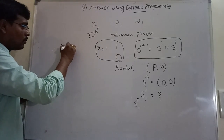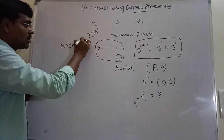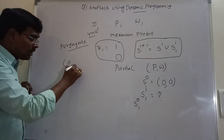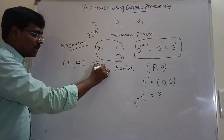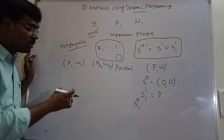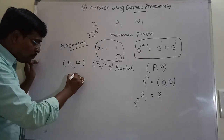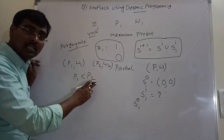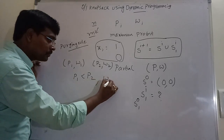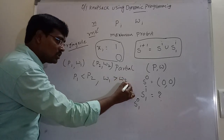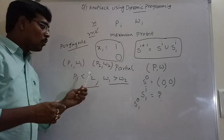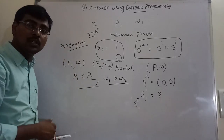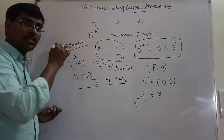There is one more rule: the purging rule. The purging rule means: consider two pairs (P1, W1) and (P2, W2). If P1 is less than P2 and W1 is greater than W2, we are placing an object with more weight and less profit. That object has no importance — simply remove it from the knapsack.